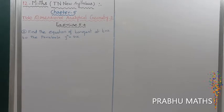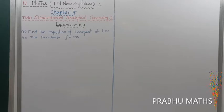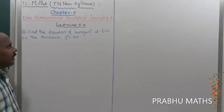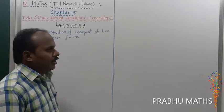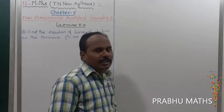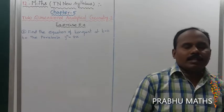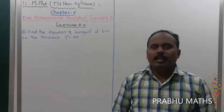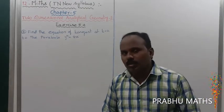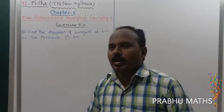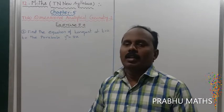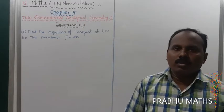Find the equation of the tangent at t equal to 2 to the parabola y squared equal to 8x. In the tangent at t equation, yt is equal to x plus at squared, where a means y squared is equal to 4ax.